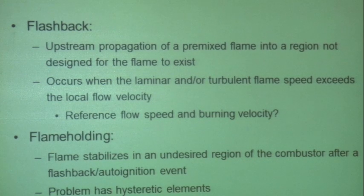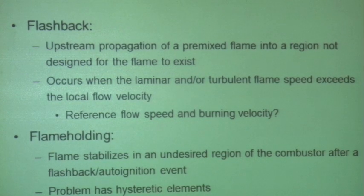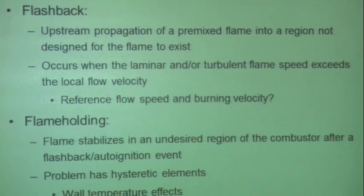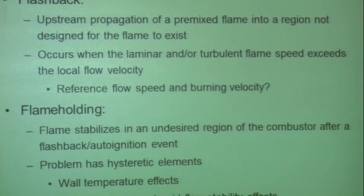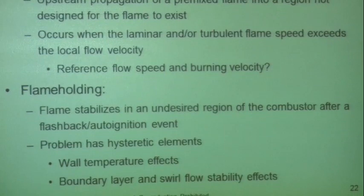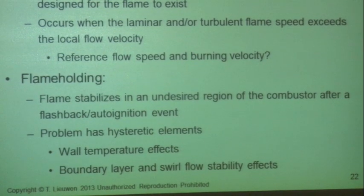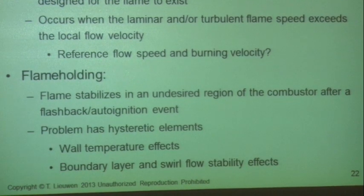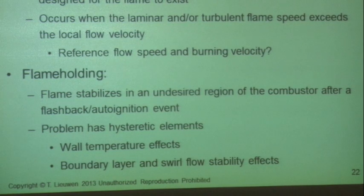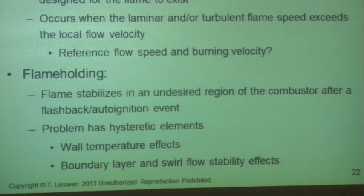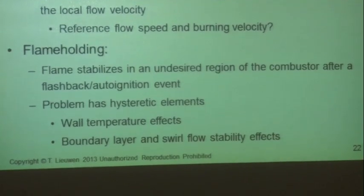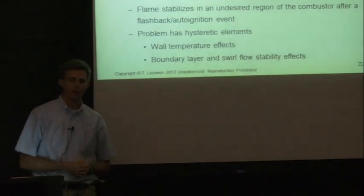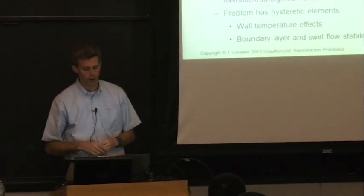In classical analyses, flashback can occur in a boundary layer where the flow velocity must go to zero. You balance quenching losses with how quickly the boundary layer reaches zero velocity. But I'll give you an example where the flame and the flow couple such that the flame 'parts the waters' in front of it — forcing low velocity flow ahead of it, causing it to advance further upstream. This can happen in the core flow or in the boundary layer.